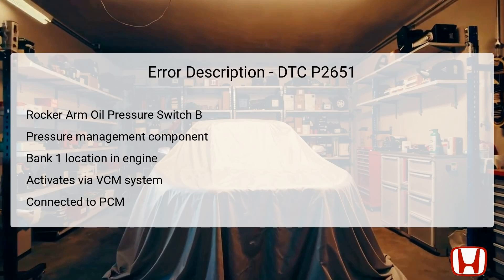The Rocker Arm Oil Pressure Switch B is an essential component located on bank one of the engine. Its primary function is to detect the oil pressure within the hydraulic circuit related to the Variable Cylinder Management system. Positioned downstream of the Rocker Arm Oil Control Solenoid B, this switch monitors the oil pressure applied to the rocker arms, which are responsible for managing valve timing. The PCM sends signals to the Rocker Arm Oil Control Solenoids to adjust the amount of oil pressure supplied. A change in oil pressure directly affects the engine's operational modes, which include full operation and cylinder deactivation. If the oil pressure condition differs from the expected values, it indicates a failure, which results in storing the P2651 code.